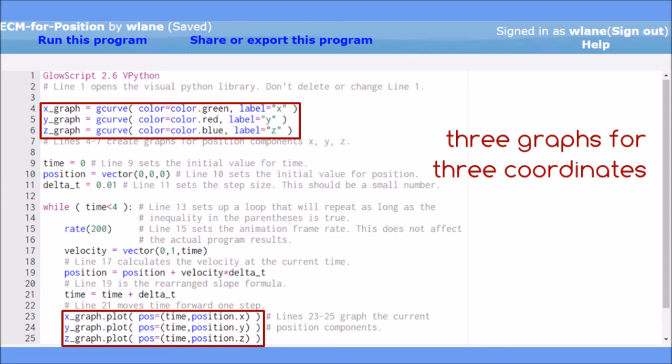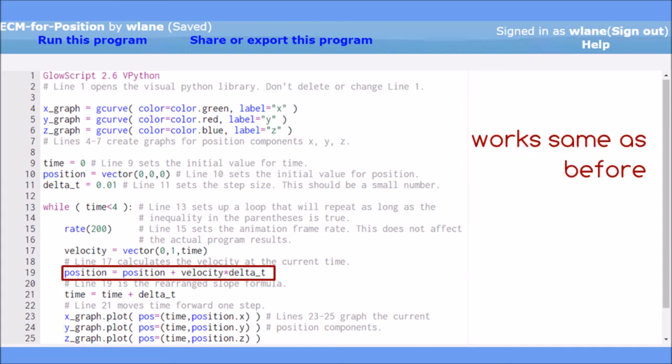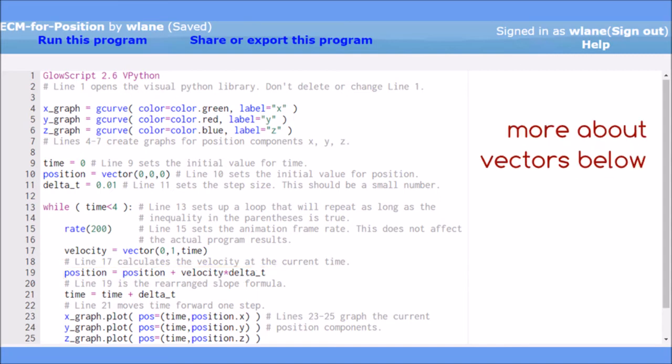But the Euler-Cromer method in line 19 works the same way as it did before. To learn more about using vectors in vpython, see the videos linked in the description below.